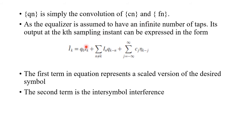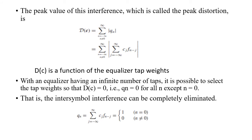Since the equalizer is assumed to have an infinite number of taps, the output at the k-th sampling instant is: ik_cap = q0·ik + Σ(n ≠ k) in·q(k−n) + Σ(j=−∞ to +∞) cj·η(k−j). The first term is a scaled version of the desired symbol q0·ik, and the second term represents the inter-symbol interference.